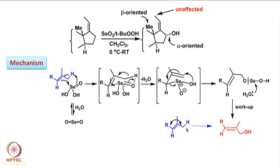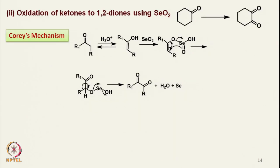This indicates that the substrate has undergone allylic oxidation retaining the geometry of the double bond — the R group and the CH3 group are trans to each other, which is also reflected in the product. This is how the reaction occurs and what the mechanism of the reaction is. Now we go to the next topic: oxidation of ketones to 1,2-diones using selenium dioxide.